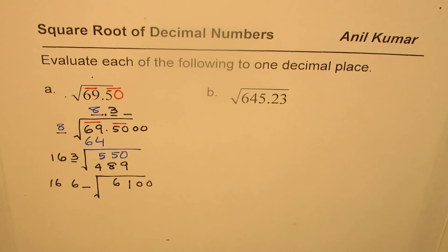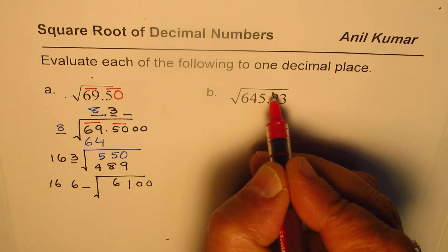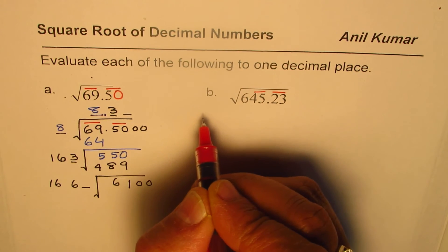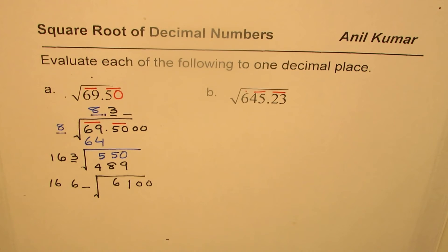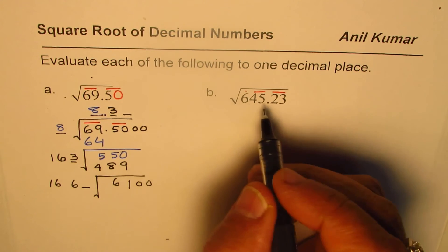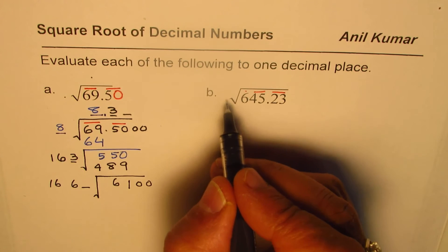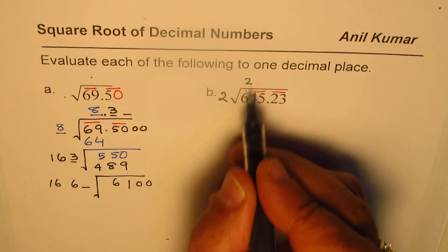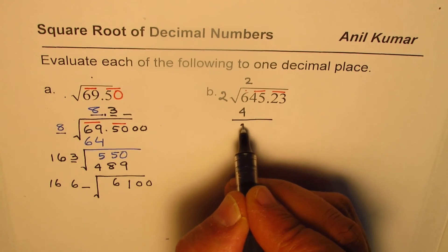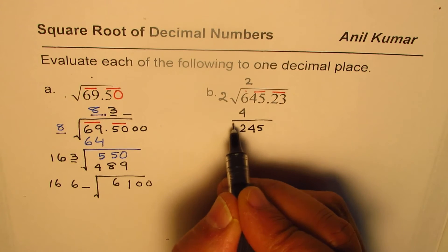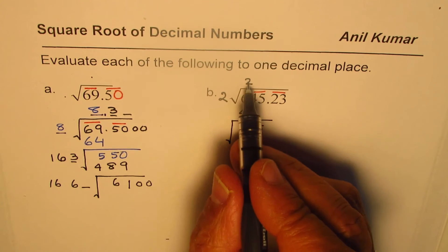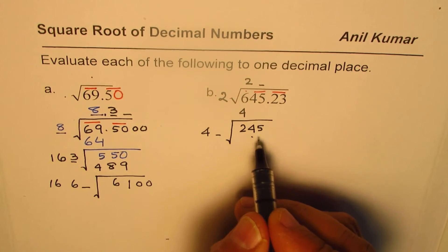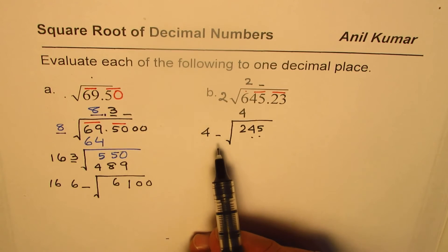Now in the second case, we have to pair starting from the decimal, both left side and right side. We have two numbers on the right — that's one pair. On the left side, 6 remains as a lone number. The number which could go here will be 2. 2 times 2 is 4, and 3 times 3 is 9, so we cannot use 3. 2 times 2 is 4, and taking away 4 gives 2. Bring down 45. Now continuing the division, twice 2 is 4. We are looking for a number to place here.